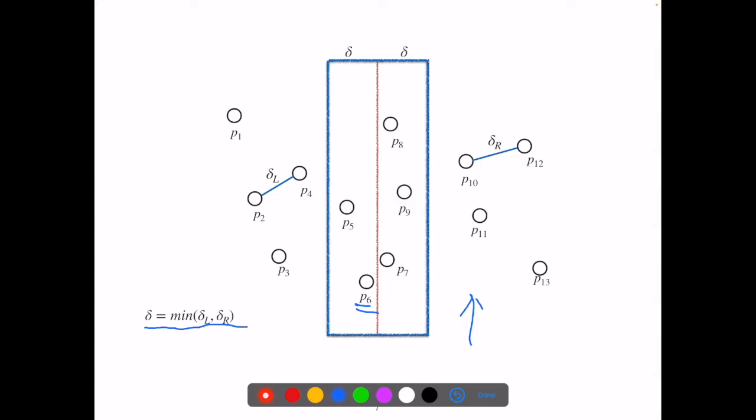This seems to be able to eliminate the computation of a lot of the points, but we don't really know how many points are in this blue rectangle for any given input graph. What if, for an input graph, all the points are in this blue rectangle?